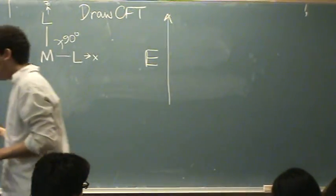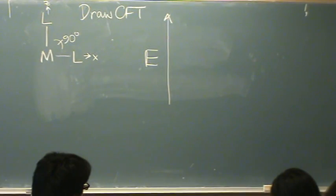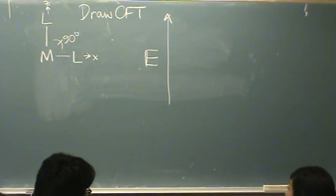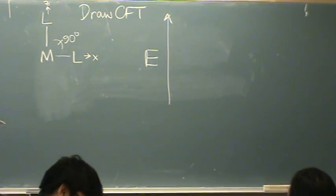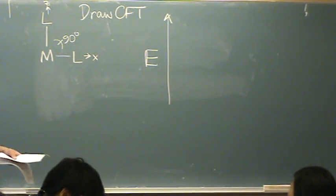The highest energy ones are the ligands that are directly bumping into those orbitals. So what I want to think is, what orbitals have something on the Z or X axis? Well, DZ squared has the lobe on the Z axis.